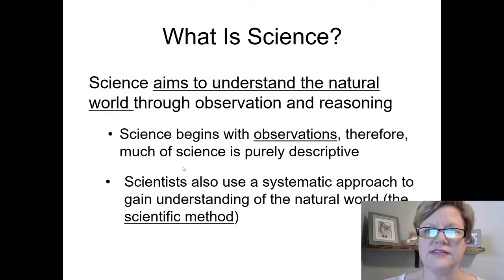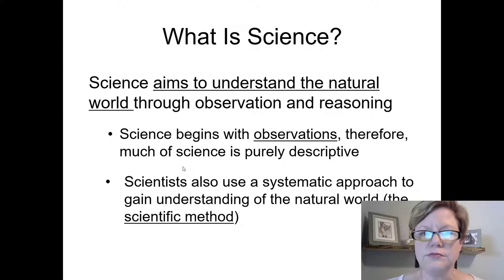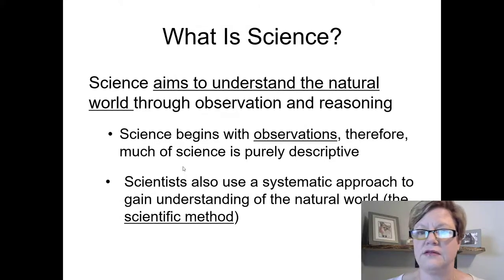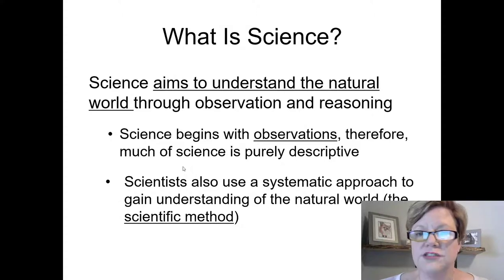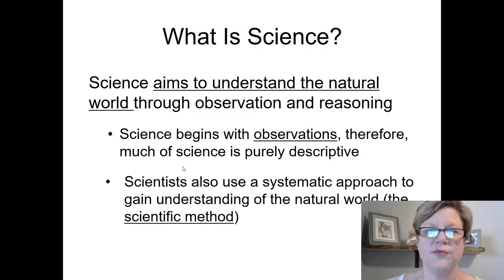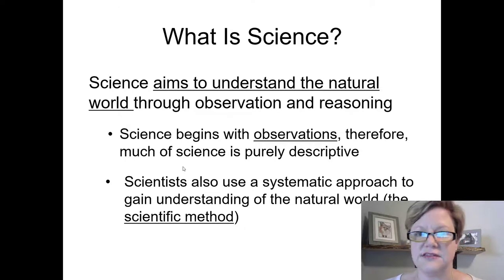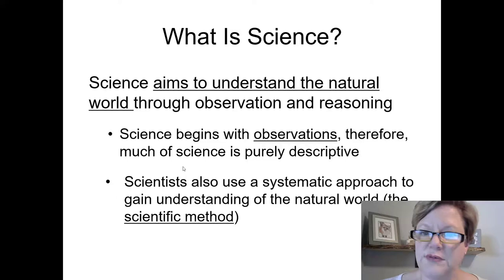Science aims to understand the natural world through both observation and reasoning and experimentation. Not all science has to be an experiment — observation is very important. The scientists who studied how honeybees communicate with each other just watched them, a lot, and eventually figured out that certain dances the bees perform have certain meanings. That's not an experiment; that's just observation.